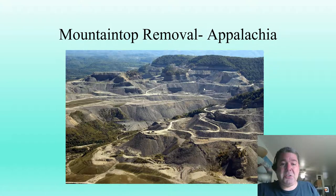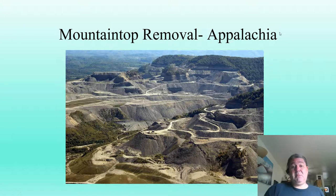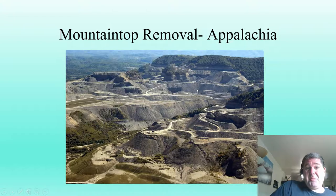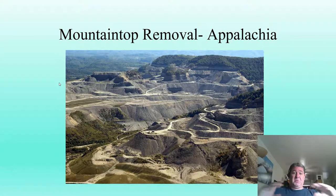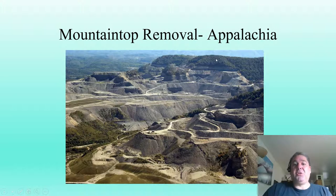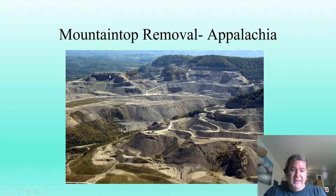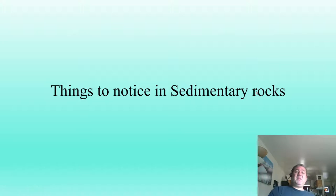Coal is used as an energy source. Shown here is an extreme example of strip mining called mountaintop removal, which happens a lot in the Appalachian coal mines. Coal is deposited as a horizontal sedimentary layer, so to extract it miners blast away the entire mountain until they reach the coal layer — very environmentally destructive. Next time we'll talk about some things to take notice of in sediment.